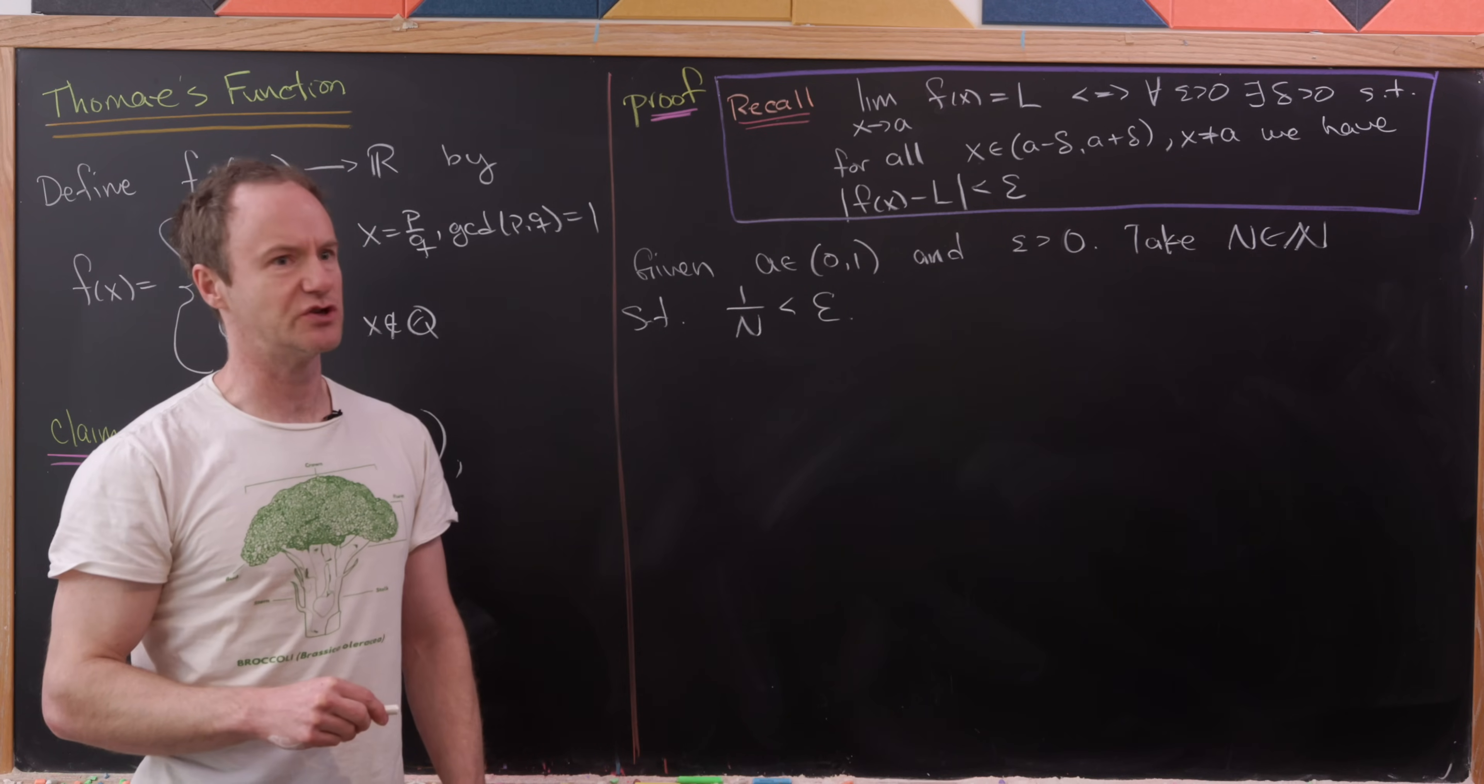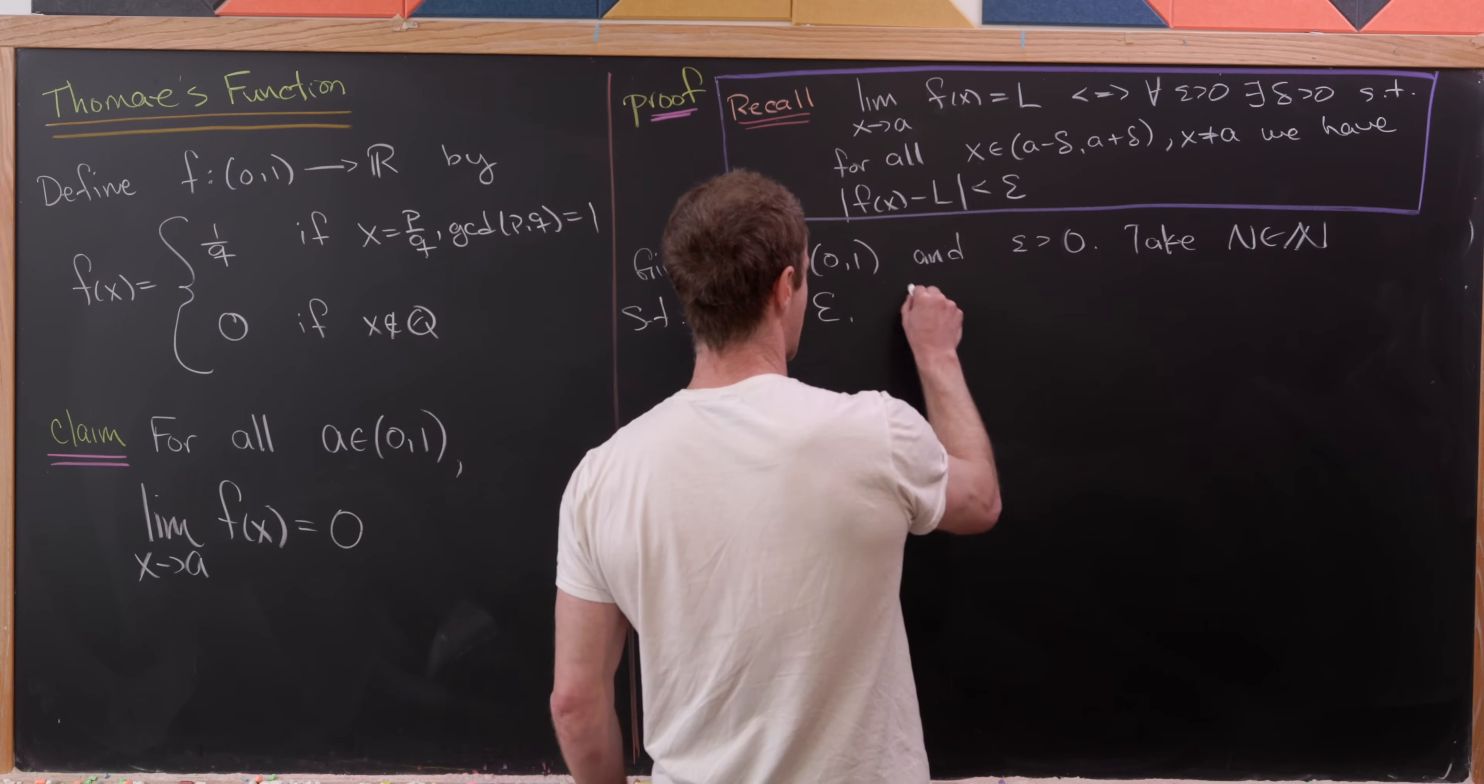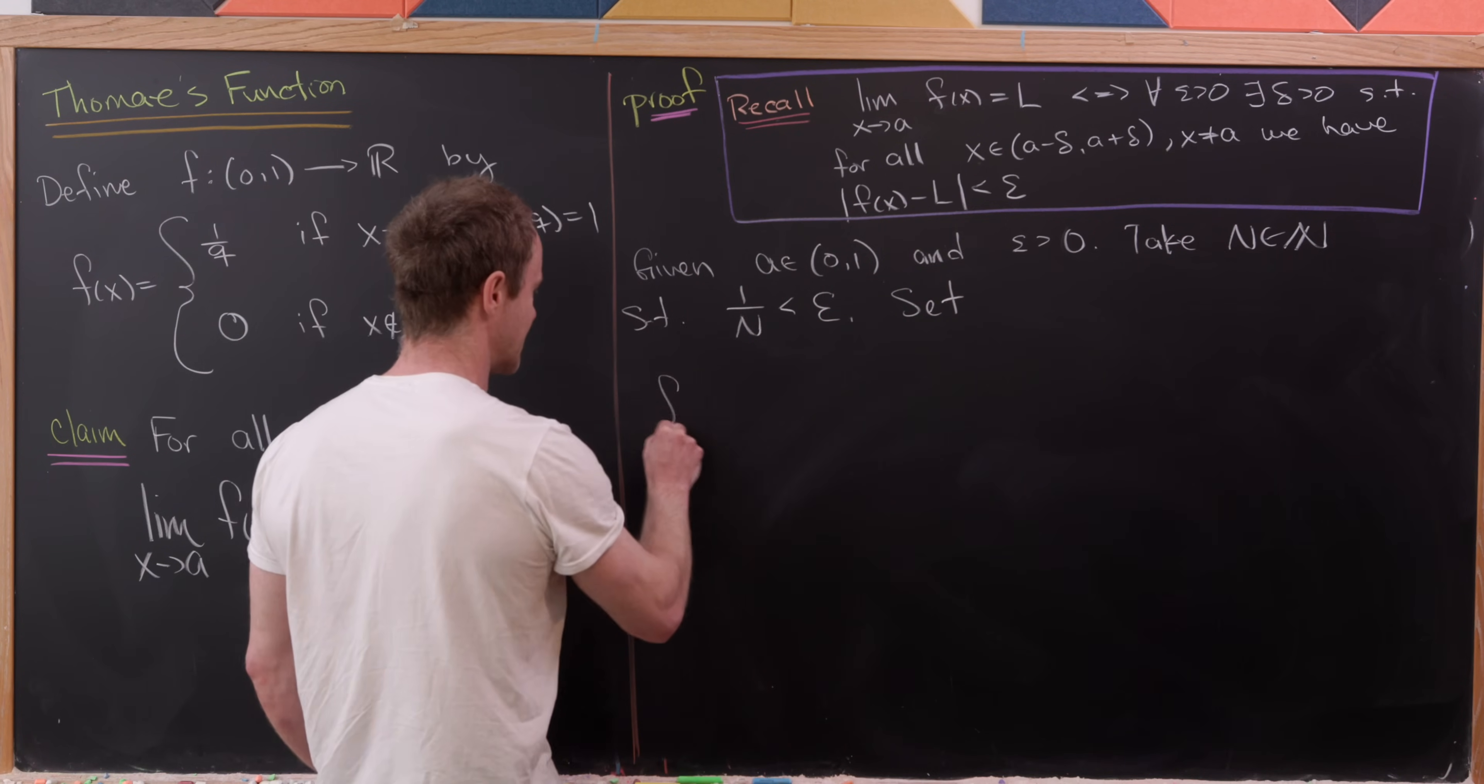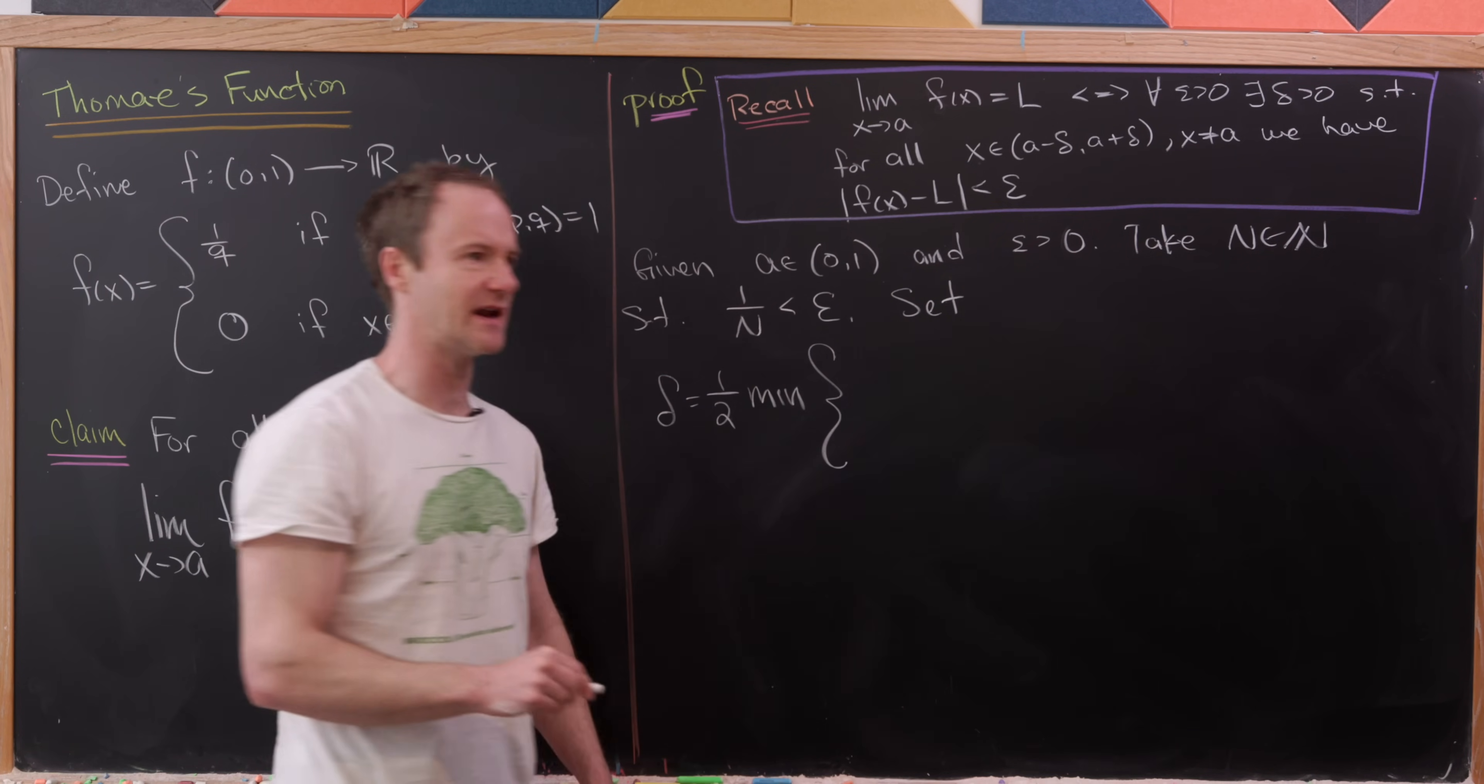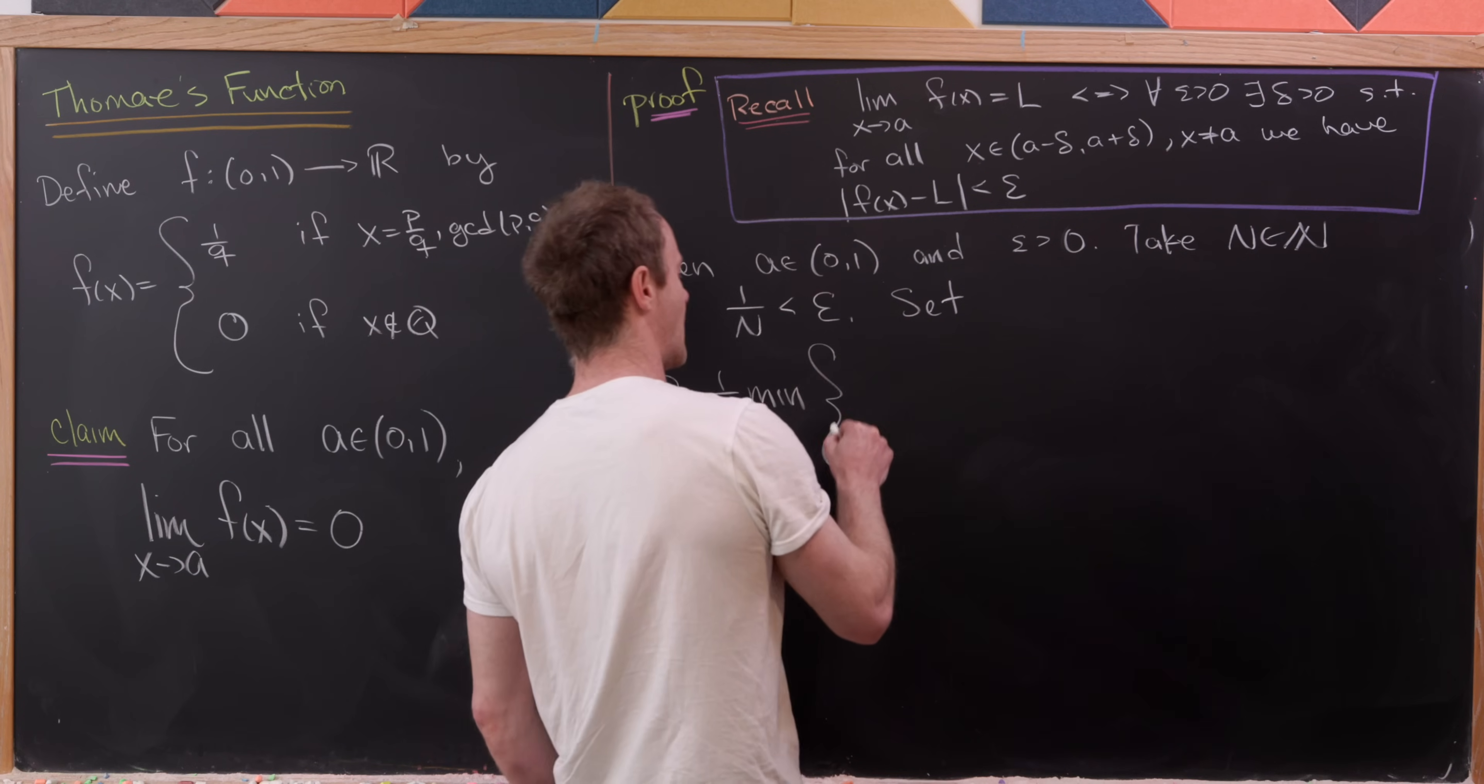And now I want to do the following. So let's define delta the following way. So let's define delta to be equal to one half of the minimum of the following kind of crazy set.